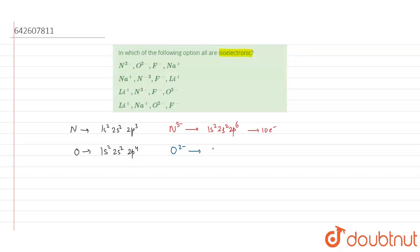So the electronic configuration becomes 1s² 2s² 2p⁶. This again has 10 electrons. Let's see for fluorine.